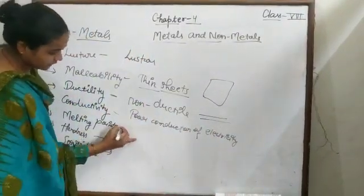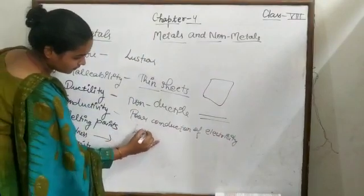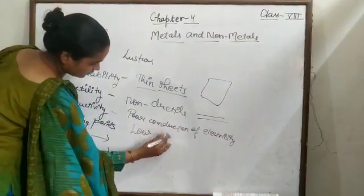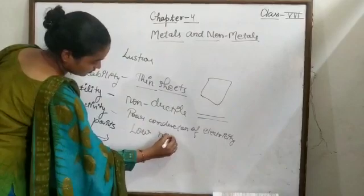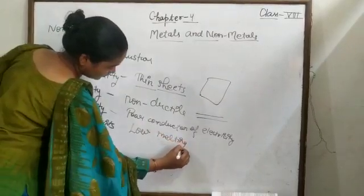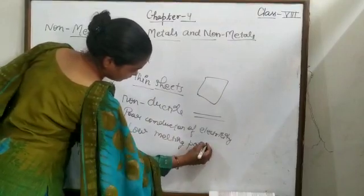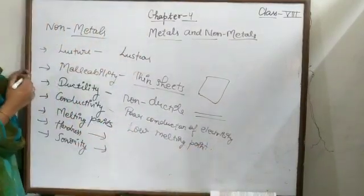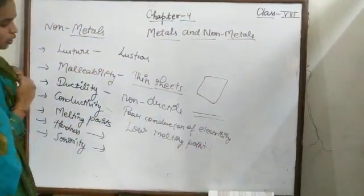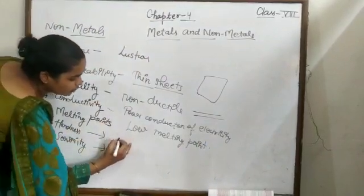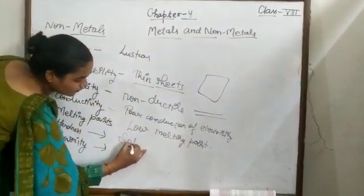And hardness. Melting point is low. Non-metals are usually soft. These are not hard. They are soft.